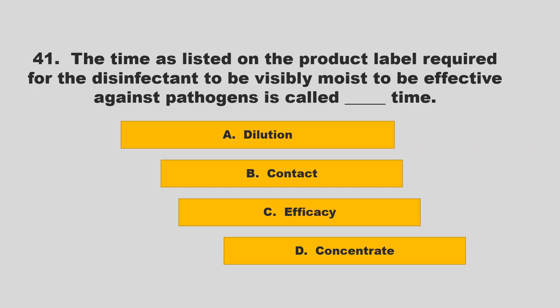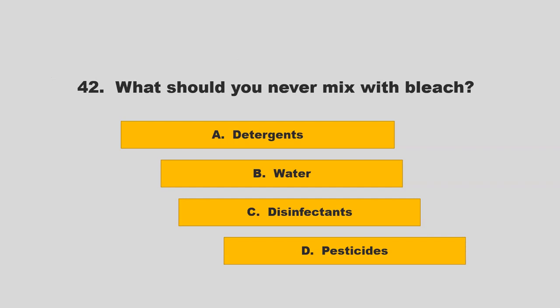The time as listed on the product label required for the disinfectant to be visibly moist to be effective against pathogens is called blank time. Options: dilution, contact, efficacy, or concentrate. The correct answer is B: contact.